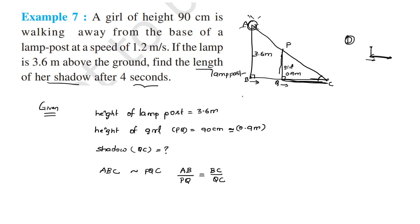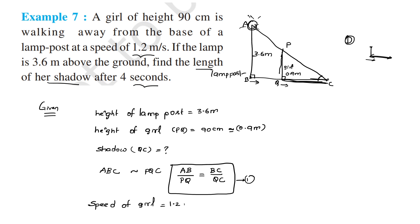Now, how do we get BC? It was given that the speed of the girl is 1.2 meters per second. We are asked to find the length of her shadow after four seconds, so in four seconds she travels 1.2 × 4 = 4.8 meters. Because distance = speed × time, the distance covered by the girl at the end of four seconds will be 4.8 meters. So BC = 4.8 + x, where x = QC.